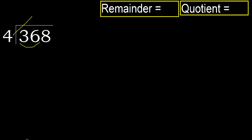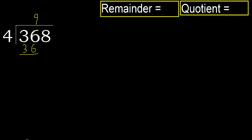but not greater. 4 multiplied by 9 is 36. Is not greater, subtract. 36 minus 36 is 0.